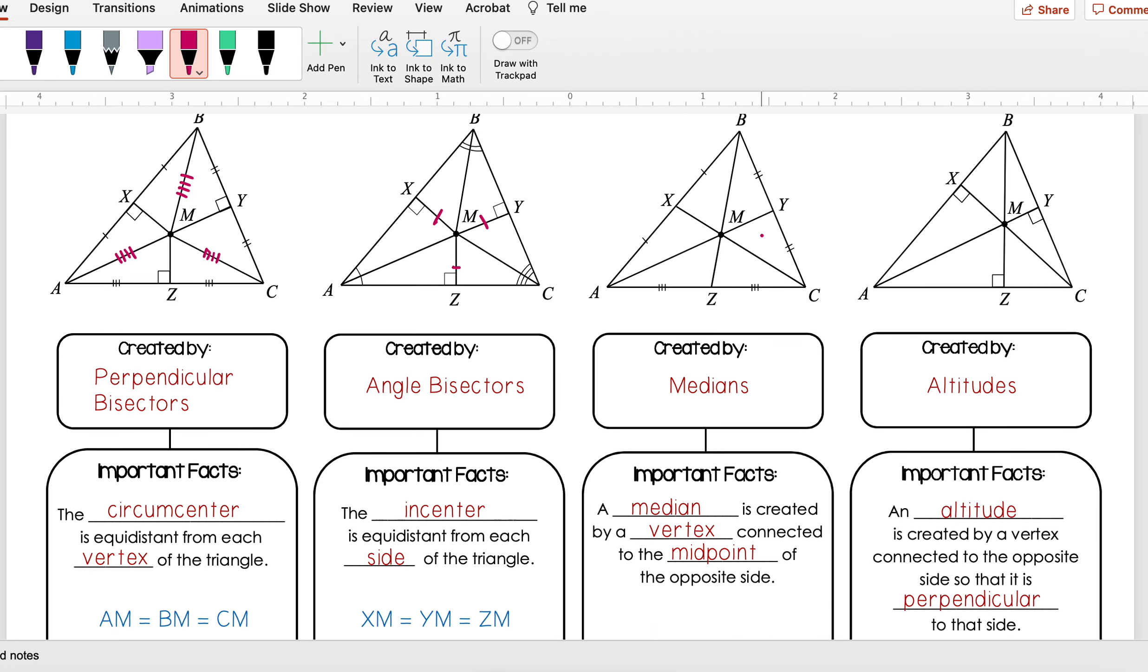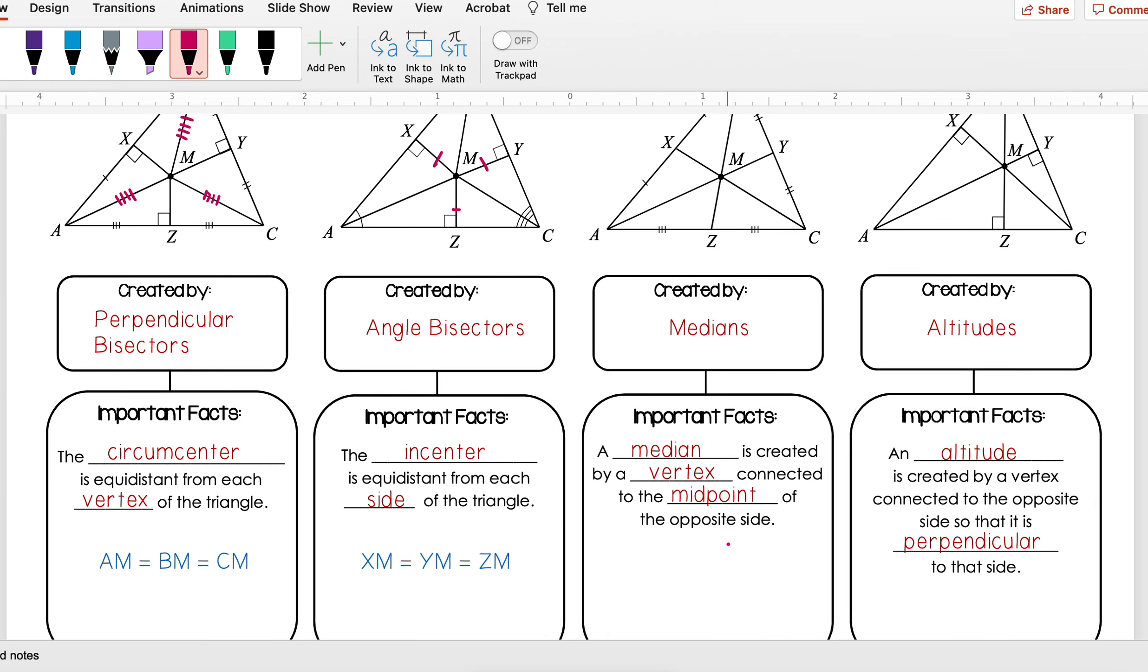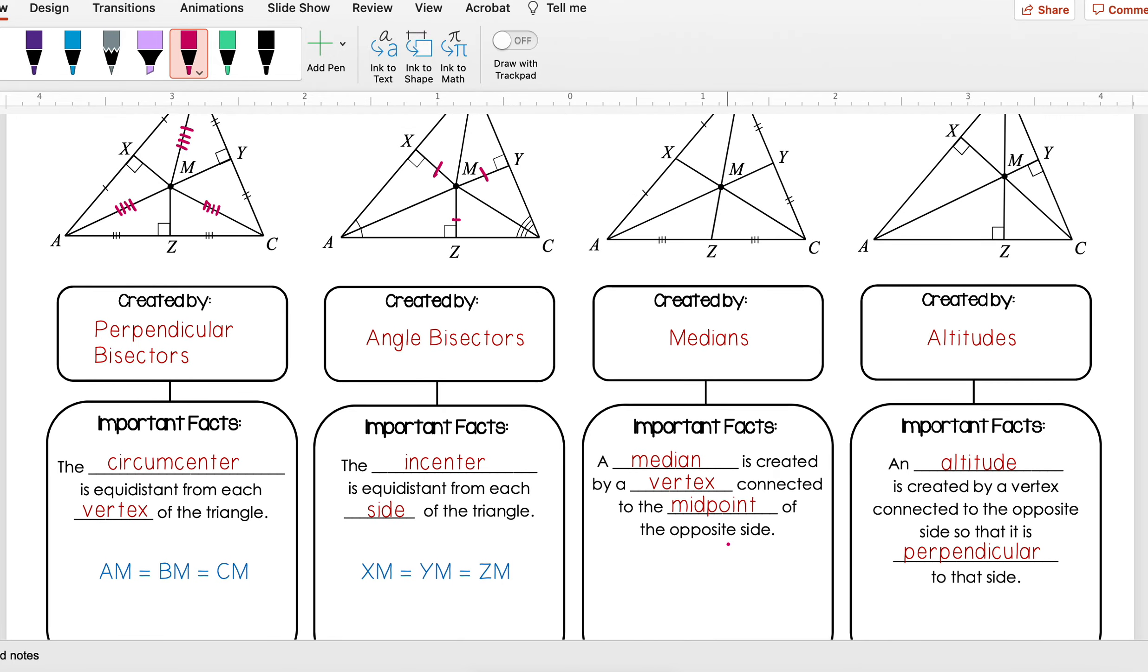Medians are for centroid. This is what we learned about today, and that is when a median is created by a vertex connected to the midpoint of the opposite side. We learned several different things here. For instance, if I'm just looking at XC, this segment right here, we get three different properties from that. First, we know that from my vertex to the centroid, that is two-thirds of the entire distance. So that means that CM is equal to two-thirds of CX.